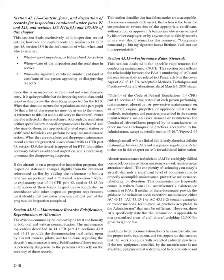Section 43.12, Maintenance Records: Falsification, Reproduction, or Alteration. The aviation community relies heavily on trust and honesty. The maintenance log entries described in Sections 43.9 and 43.11 provide the documentation trail relied upon by aircraft owners, pilots, and technicians. Falsification of these records is potentially dangerous. This section identifies that fraudulent entries are unacceptable and are the basis for suspension or revocation of the appropriate certificate, authorization, or approval. A technician encouraged to falsify records should remember: 'companies come and go, but my signature lasts a lifetime. I will not use it inappropriately.'